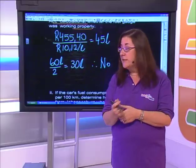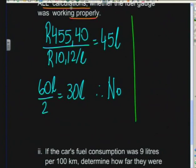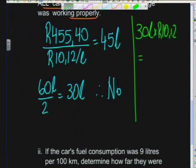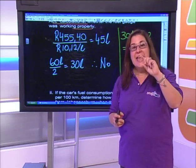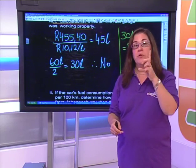Another way to verify: half a tank = 30 liters × R10.12 = R303.60. That is less than the R455.40 they actually paid, confirming the fuel gauge was not working properly. There are two ways to do this kind of question - both lead to the same answer.